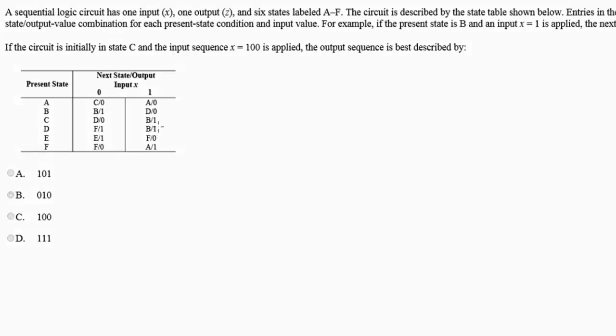The circuit is described by the state table shown below. Entries in the two right-hand columns, these ones right here, represent the next state slash output value. So we have next state output, which means C, B, D—they represent your next state for whatever input. If your input is zero, then depending on your present state, you either have your next state as the left hand, and then your output would be your right hand. If your input is one, you follow the same logic.